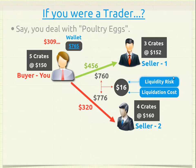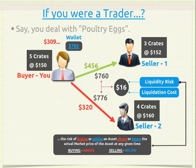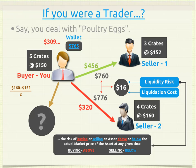This is also known as liquidity risk, which we define as the risk of buying or selling an asset above or below the actual market price at any given time. If a third person came to buy from you, they would be affected by the fact that you acquired your 5 crates at two different prices, so the average becomes a new price — say $156 — which is the minimum price you would accept from any buyer, because of the liquidity risk premium you've incurred.